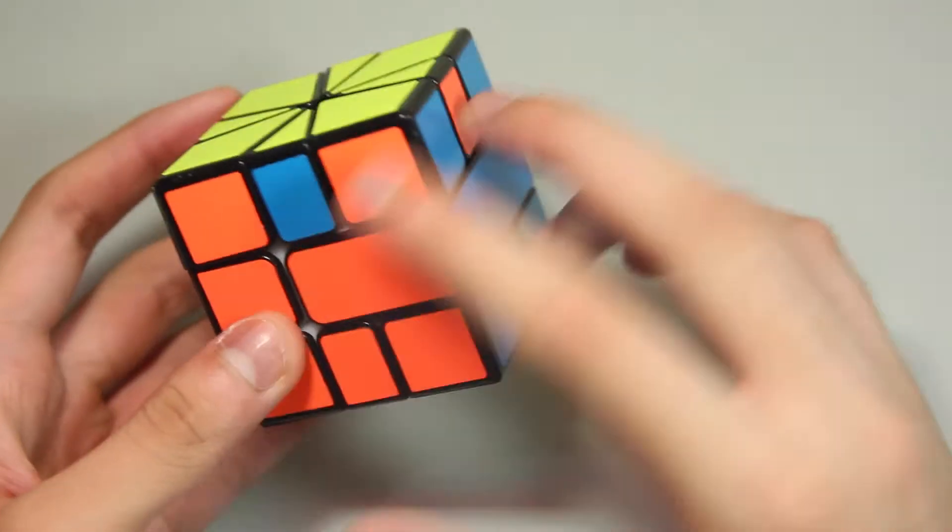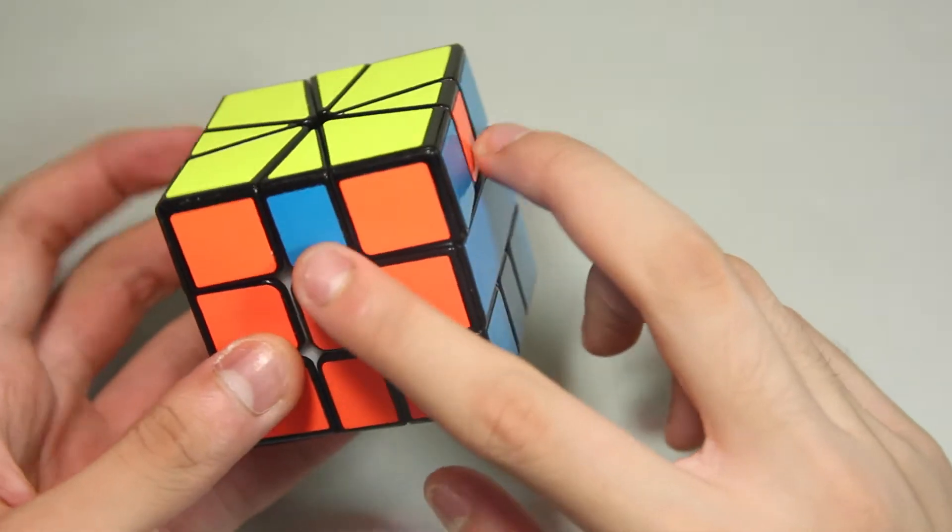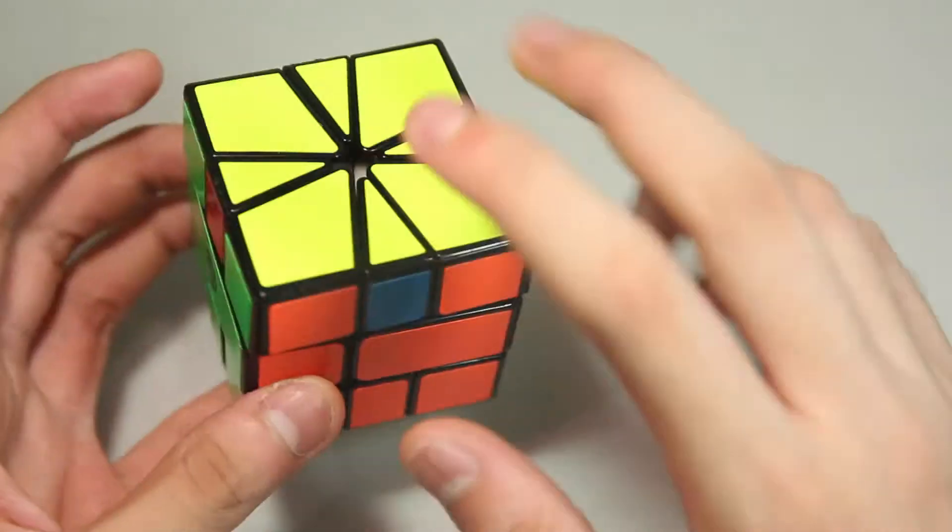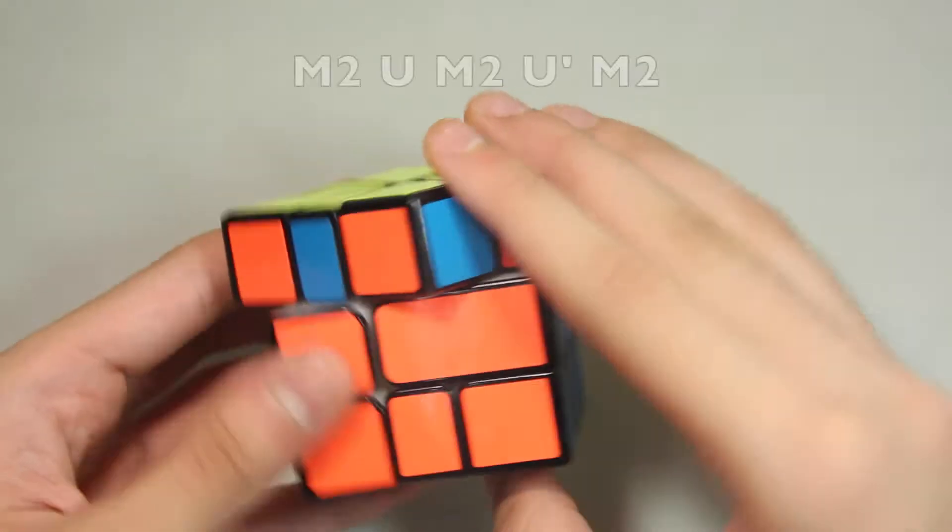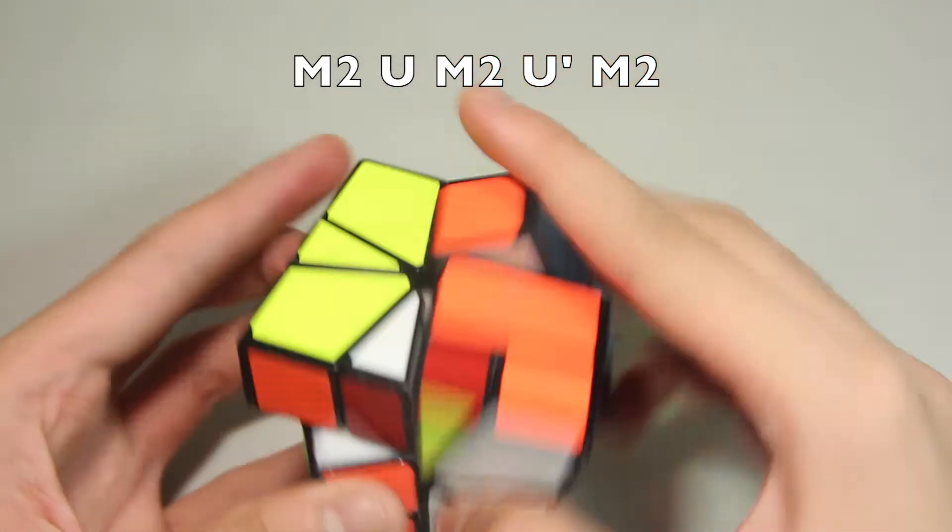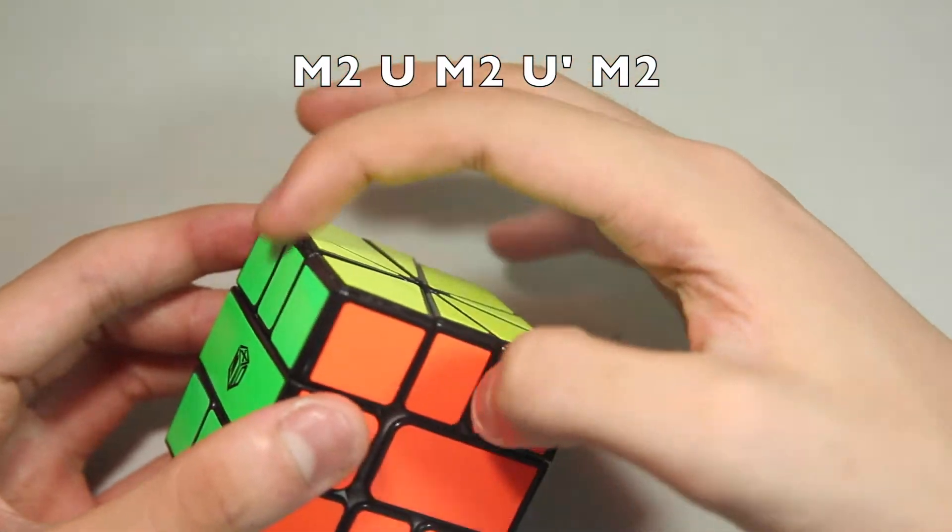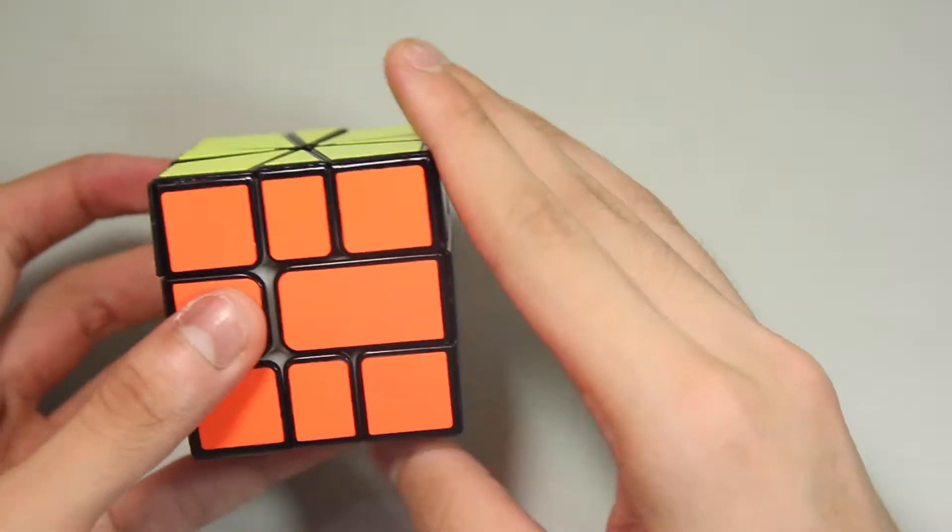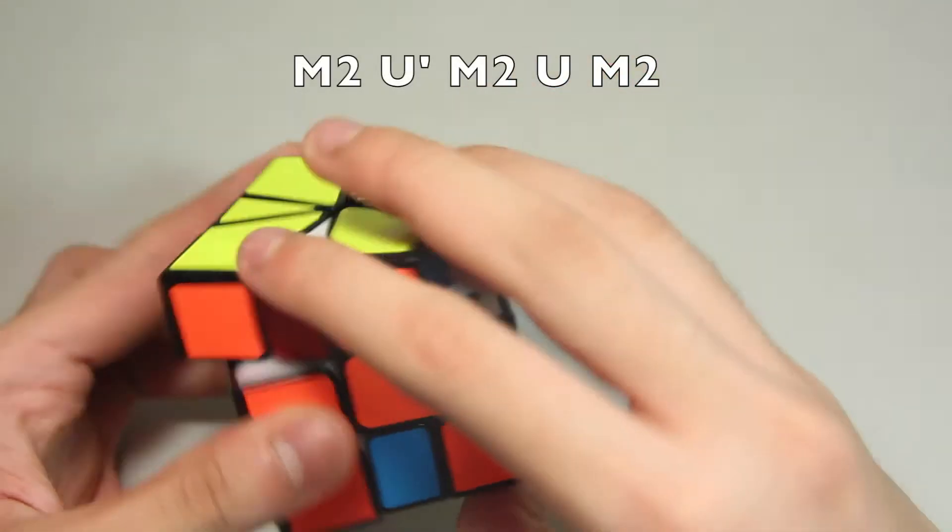The next one I'm going to show you is the Z perm. If you have the corresponding edges here and here, all you do is M2, U, M2, U prime, M2. And if it's like here, you just do the mirror of it, which is M2, U prime, M2, U, M2.